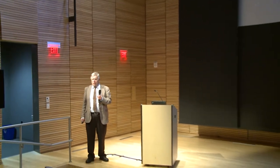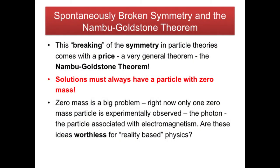The problem was you paid a price — no good idea comes without a catch. Every time you took a set of symmetric equations and looked for non-symmetric solutions, the only way you could do it was to find, associated with those solutions, a particle with zero mass. That's a huge problem, because experimentally there has only been one zero-mass particle observed for certain: the photon.